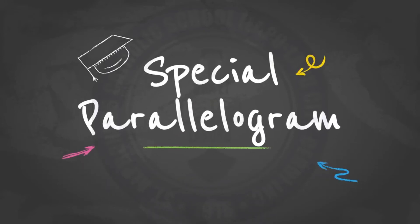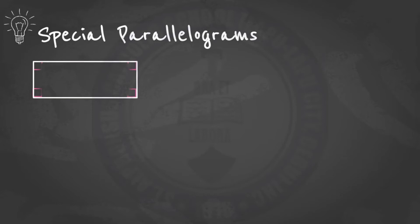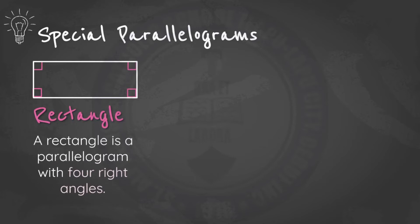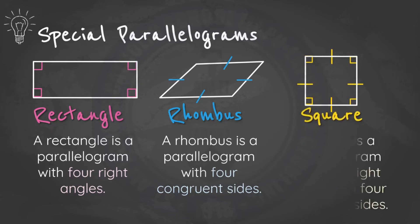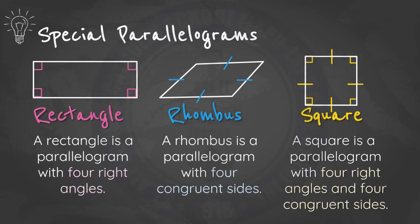We will be dealing with the three special types of parallelograms: a rectangle, a rhombus, and a square. First, we have a rectangle. A rectangle has four right angles. The second special parallelogram is a rhombus, wherein a rhombus is a parallelogram with four congruent sides. And lastly, we have a square. A square is a parallelogram with four right angles and four congruent sides.